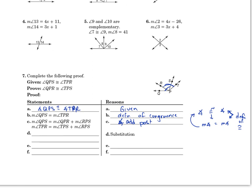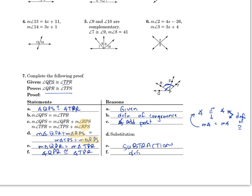Since the two angle sums are equal, we set them equal by substitution: the measure of angle QPR plus angle RPS equals the measure of angle TPS plus angle RPS — and this was our substitution step. Now we subtract what they have in common: angle RPS appears on both sides, so we subtract it out. After subtraction, we're left with the measure of angle QPR equals the measure of angle TPS — and this was subtraction. Then, going from equal measures back to congruence: angle QPR is congruent to angle TPS — by definition of congruent.